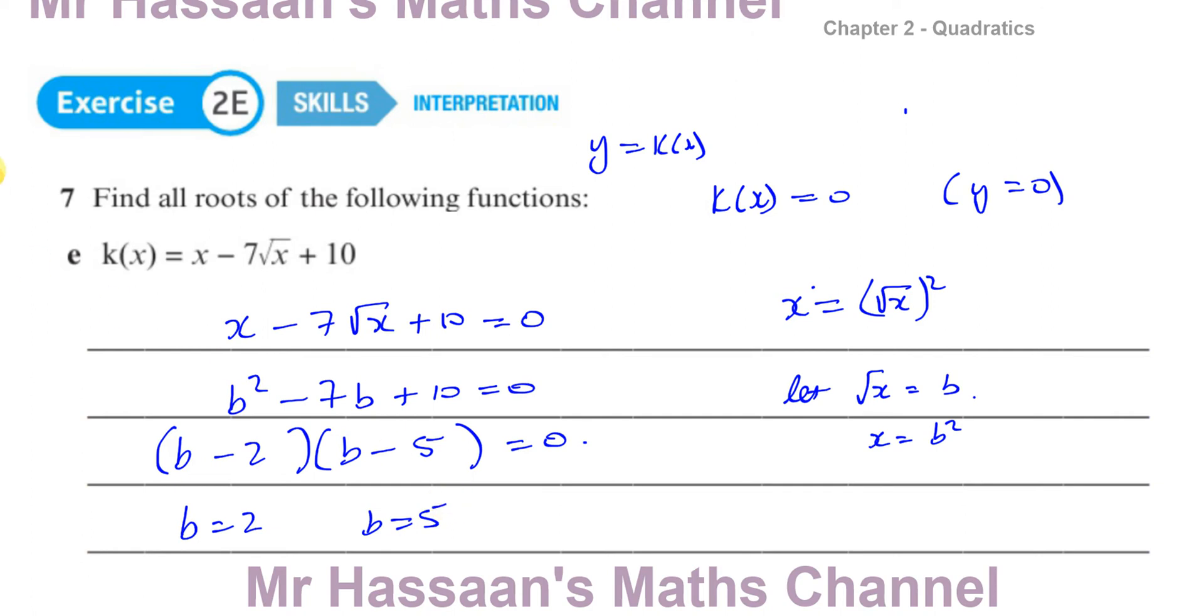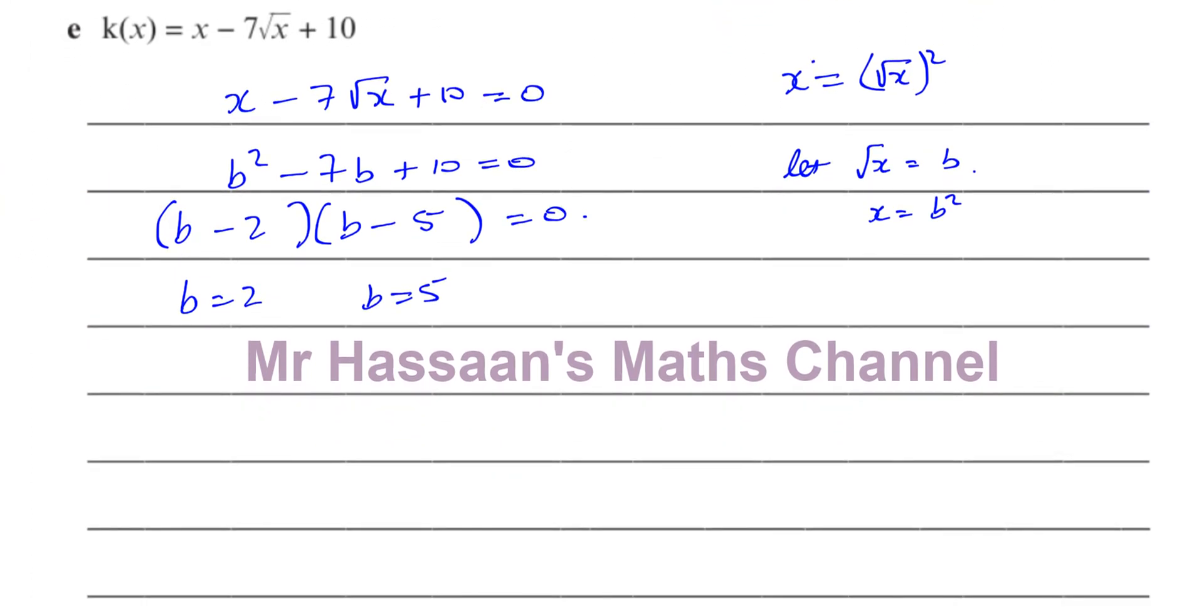Now, that's not our final answer, because we have to go on. We have to find x. We don't have to find b. There's no b's in the question. We put b there to make it look like something we can solve easily. So now what we're going to do is say, b is equal to root x. So I can replace the b with root x. So root x is equal to 2, and the square root of x is equal to 5. This question doesn't have a problem, but some questions will have a problem. So I'm going to explain to you.